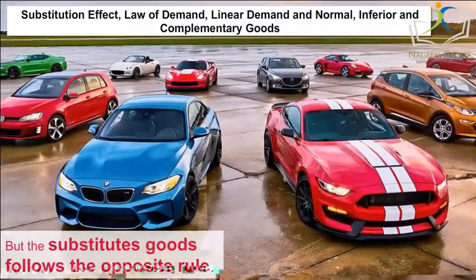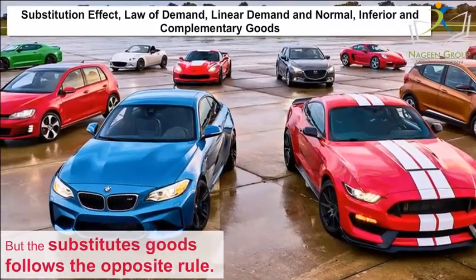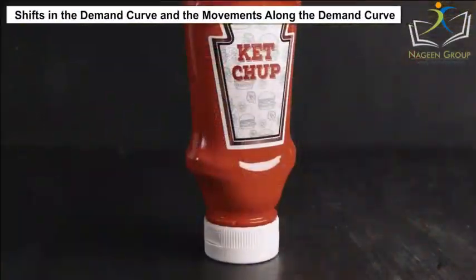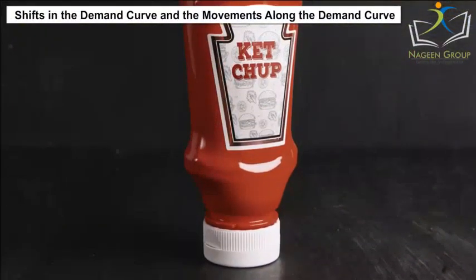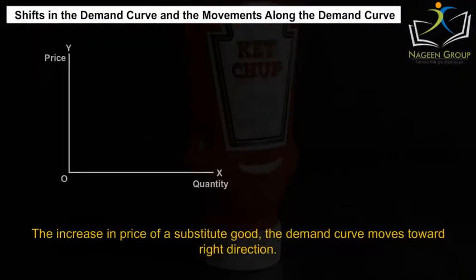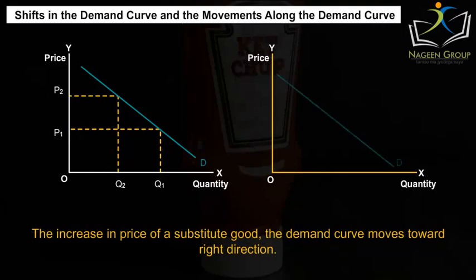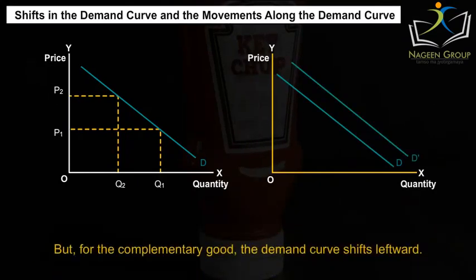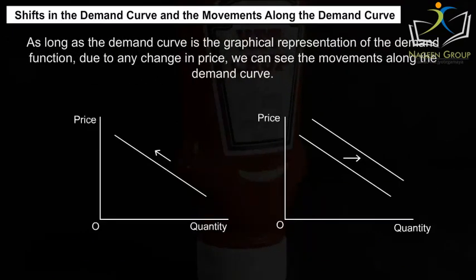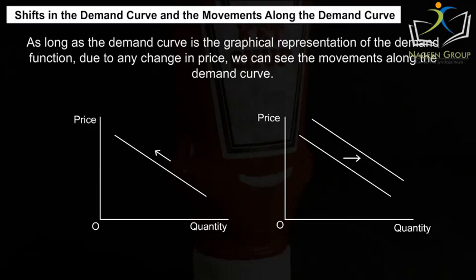Substitute goods follow the opposite rule. Regarding shifts in the demand curve: the increase in price of a substitute good moves the demand curve rightward, but for a complementary good, the demand curve shifts leftward. As long as the demand curve is the graphical representation of the demand function, any change in price causes movements along the demand curve.